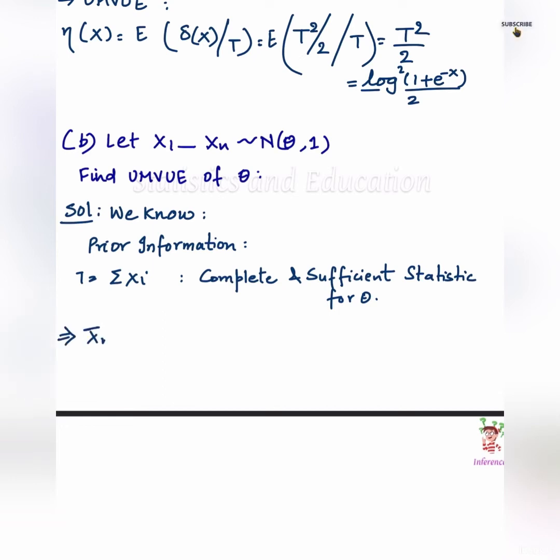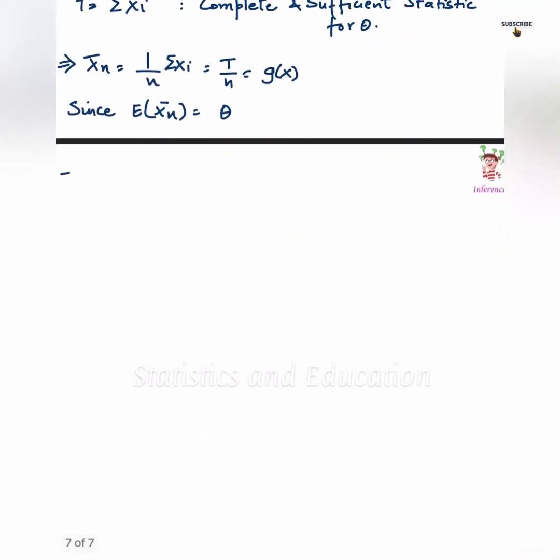Now, what remains is to find an unbiased estimator of theta. If we condition X bar on summation Xi, we get an unbiased estimator as X bar which is the UMVUE of theta.